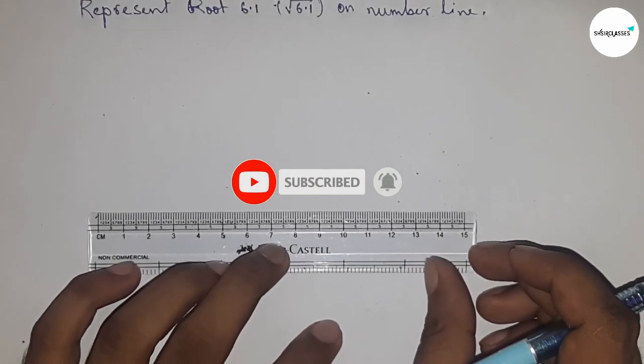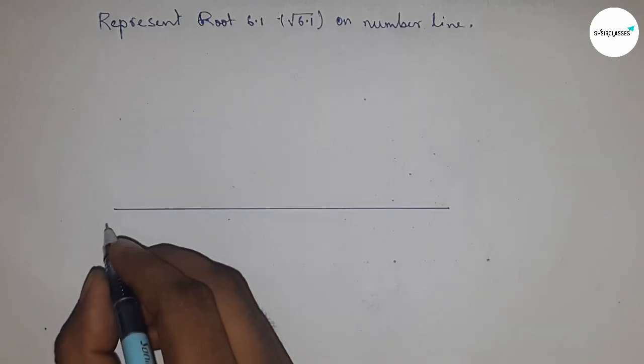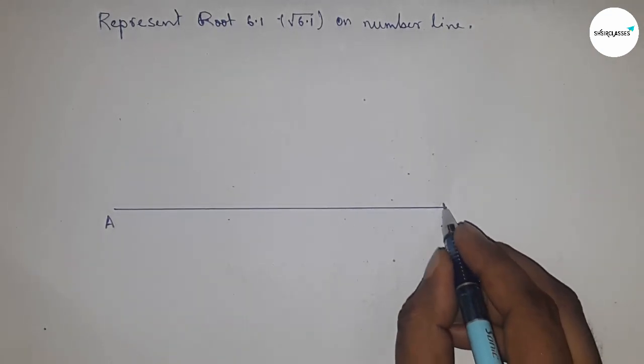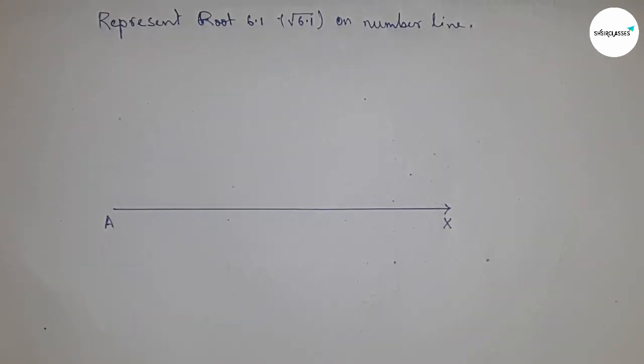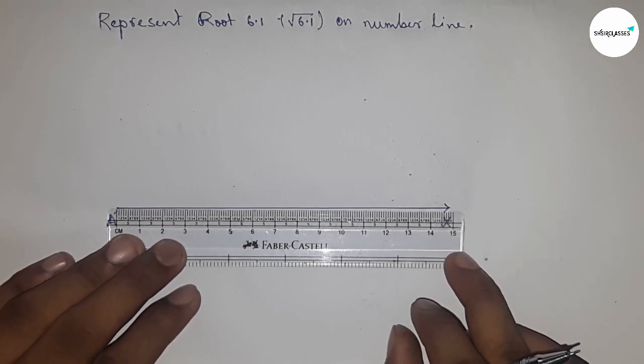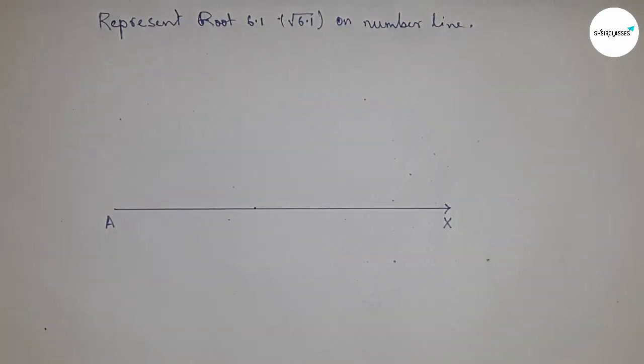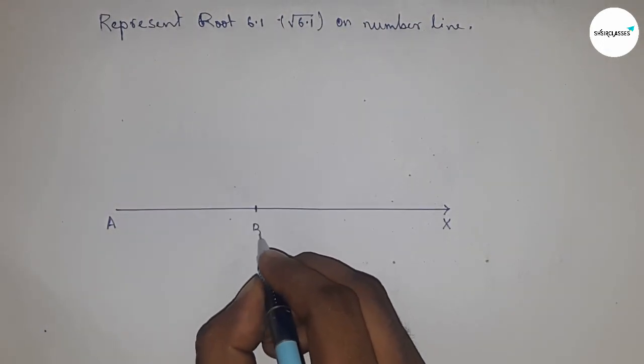Okay, so let's start. First of all, draw a line of any length, and this is the AX line. Next, take a length of 6.1 centimeters by using a scale, so this is 6.1 centimeters, and this is point B.